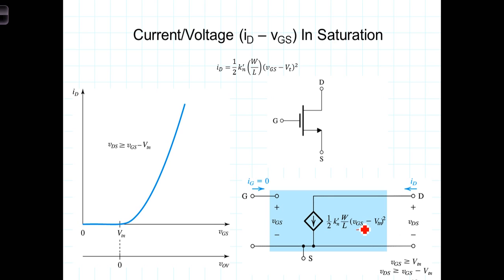Then again, the amplification occurs because for small changes in VGS, we see larger or amplified changes in the current.